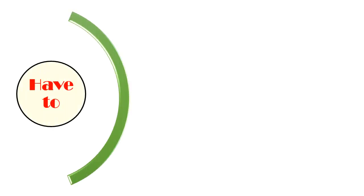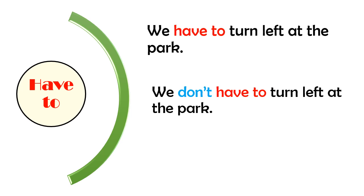Everybody look. I have some more examples of have to. The first one: We have to turn left at the park. Easy one, right? And next one: We don't have to turn left at the park. You can see DON'T before have to. And the last one is the question: Do we have to turn left at the park? Look at that. You put DO before the subject WE. And after that, have to. Okay. I think you can make example for yourself.